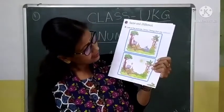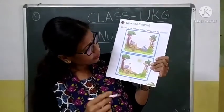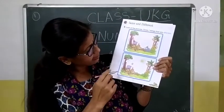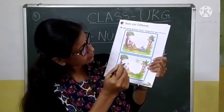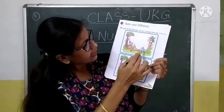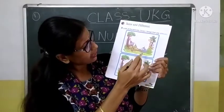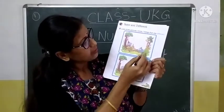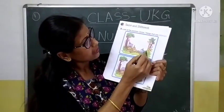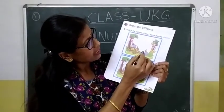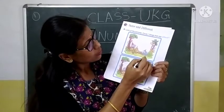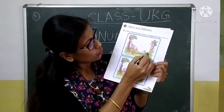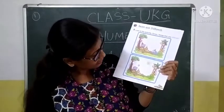Then see what is different. Here it is elephant. Here no elephant. So circle the elephant. So we got two different.